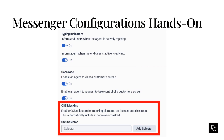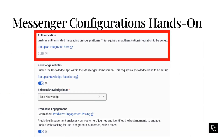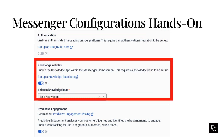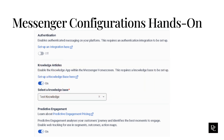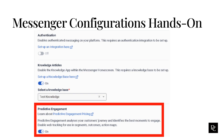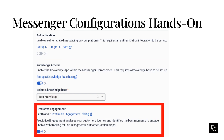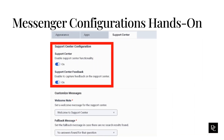To allow only authenticated users to start a web messaging session with agents, under Authentication, either enable the integration, or if you do not have a valid OpenID, click set up an integration here. Install OpenID Connect Messenger configuration from AppFoundry, configure it, and return to this page. Under Knowledge Articles, select whether to enable the Knowledge app. When you enable Messenger home screen and Knowledge Articles, users can search for answers to commonly asked questions and topics. Under Predictive Engagement, select whether to enable the Messenger to collect data about customer activity on your website. Predictive Engagement uses this data to track and manage customer activity. Finally, under the Support Center tab, you can enable Support Center functionality and enable Support Center feedback if you want to capture it.